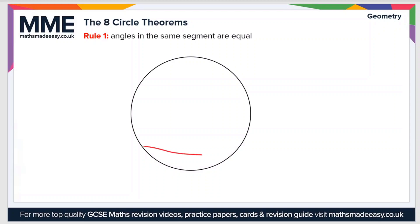First, let's draw a segment. A segment is the area formed when a chord cuts across two points on the circumference of a circle. So that's this point here and this point here. The segment is this area here. Now, angles in the same segment are equal.